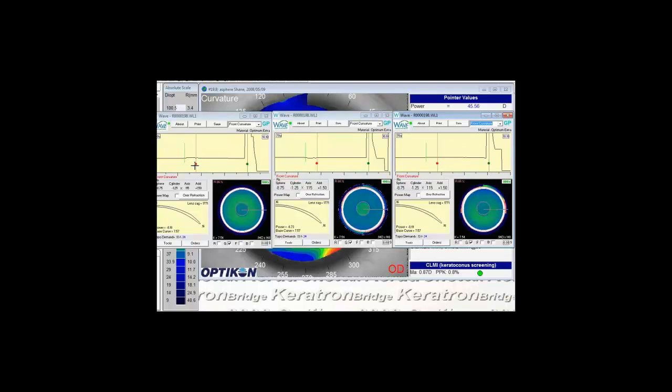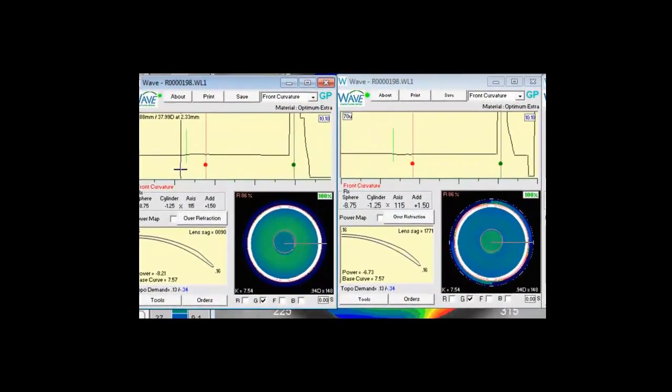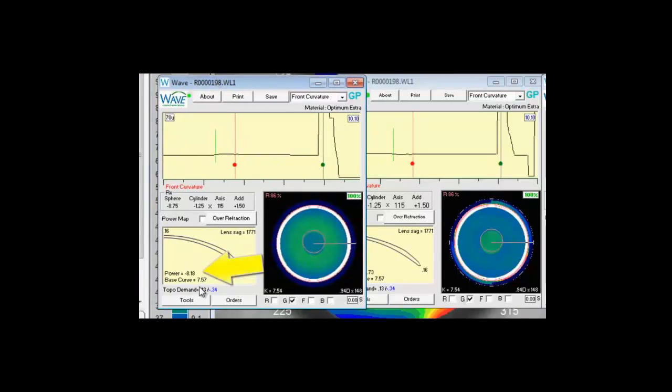So what we'll see here the center distance we have our distance zone is in the center. On this front curvature view as this line starts to increase up take a look at the power of a minus 818 centrally or 820. As we get to that bump the add power or the distance power starts to decrease.